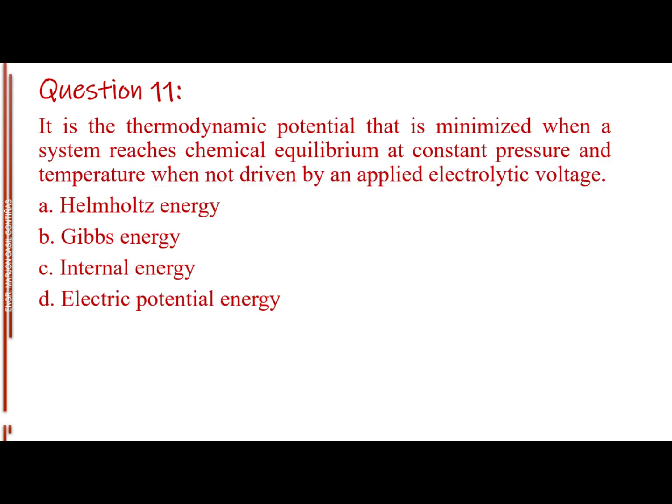Question number 11. It is the thermodynamic potential that is minimized when a system reaches chemical equilibrium at constant pressure and temperature when not driven by an applied electrolytic voltage. Letter A, Helmholtz energy. Letter B, Gibbs energy. Letter C, internal energy. Letter D, electric potential energy. The answer is letter B, Gibbs energy.